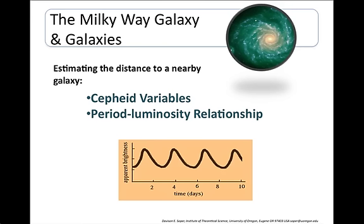Cepheid variables are the stars which pulsate or blink, and this is connected to how bright they are. For example, stars that take a longer time to pulsate tend to be brighter. Because we know the mass-luminosity relationship, it follows those bigger stars will take a longer period of time to pulsate.